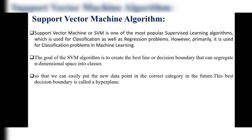The goal of the SVM algorithm is to create the best line or decision boundary that can segregate n-dimensional space into classes. It separates the n-dimensional space into classes so that we can easily place a new data point in the correct category. This best decision boundary is called a hyperplane.